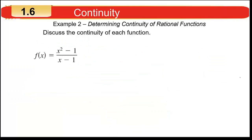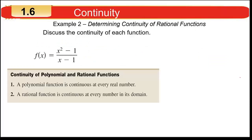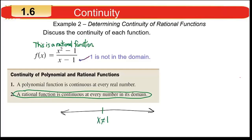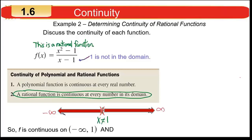How about f(x) = (x² − 1)/(x − 1)? This is a rational function, so it's continuous at every number in its domain. Plugging 1 in for x causes division by 0, so 1 is not in the domain. The function is continuous from minus infinity to 1, and from 1 to infinity — skipping 1 itself. The domain is minus infinity to 1, union 1 to infinity.